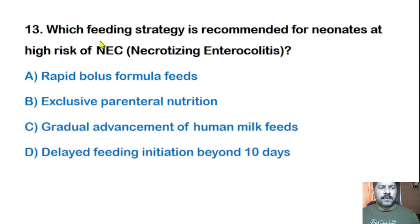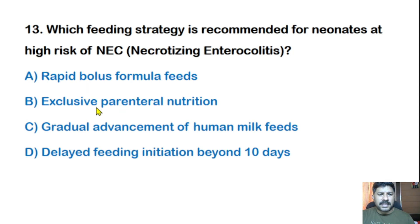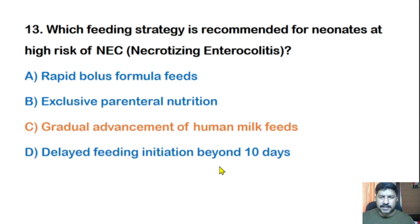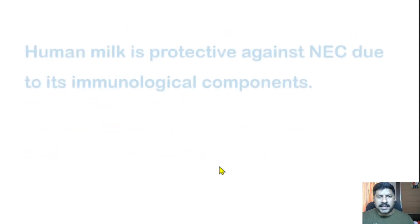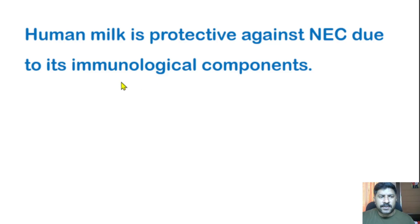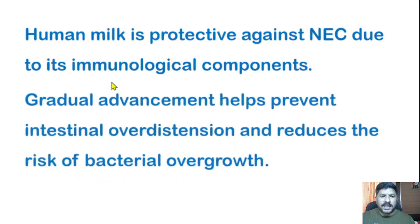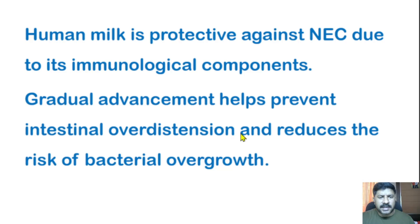Thirteenth question: Which feeding strategy is recommended for neonates at risk of necrotizing enterocolitis (NEC)? Options: rapid bolus formula feeds, exclusive parenteral nutrition, gradual advancement of human milk feeds, or delayed feeding initiation beyond 10 days. The correct answer is gradual advancement of human milk feeds. Human milk is protective against NEC due to its immunological components, and gradual advancement helps prevent intestinal over-distension and reduces the risk of bacterial overgrowth.